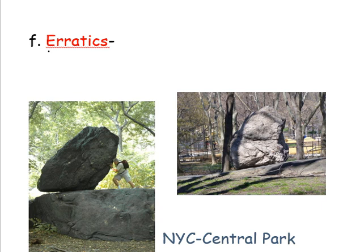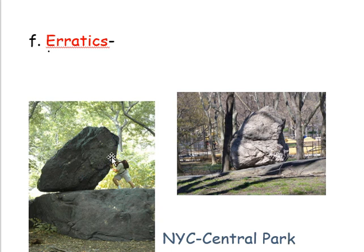Furthermore, we see evidence that glaciers have been in landscapes when we find big boulders that are very different from the bedrock they sit on. For example, a giant metamorphic rock sitting on limestone — how did it get there? Many argue these big rocks came from Canada, transported by the glacier. When the glacier melted, it simply dropped them randomly in the landscape. For this reason, we call them glacial erratics — giant boulders deposited from our last glaciation.